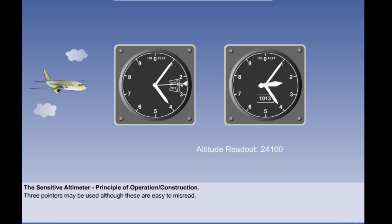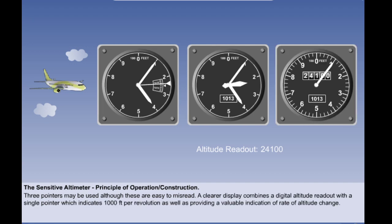Both the altimeters shown here are actually indicating 24,100 feet. In this version of the instrument, a much clearer display is achieved by substituting two of the three pointers with a digital altitude readout. A single pointer is retained to indicate 1,000 feet per revolution and to provide a valuable indication of the rate of altitude change. This altimeter is also indicating 24,100 feet.